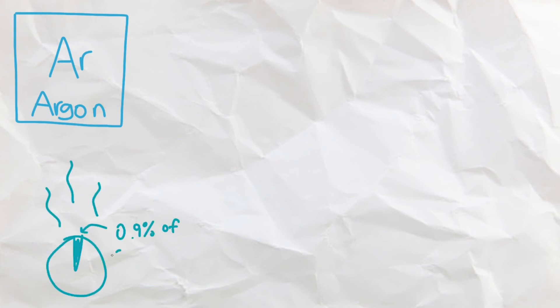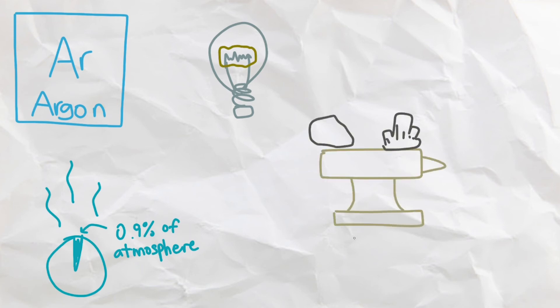Next, we have argon, which is a colorless and reactive noble gas that makes up 0.9% of our atmosphere, the third most abundant gas right after nitrogen and oxygen. Its most common use is in fluorescent tubes and light bulbs to prevent corrosion inside the bulb. It is also used in arc welding, which is the joining of metals through heat created by electricity, as sort of like an atmosphere shield.